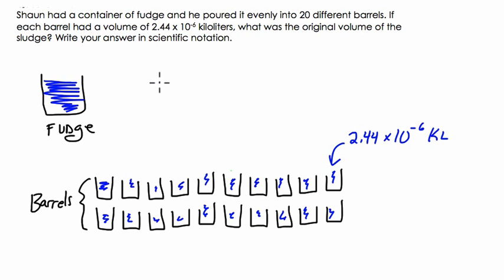2.44 times 10 to the negative 6. So let's do that. And that will equal what's in this fudge container here. So 2.44 times 10 to the negative 6 times 20, and I'm going to write that in scientific notation.